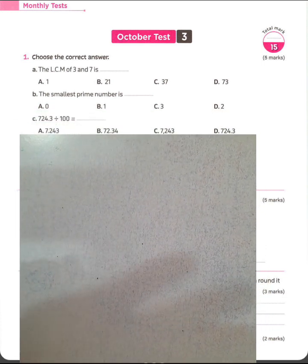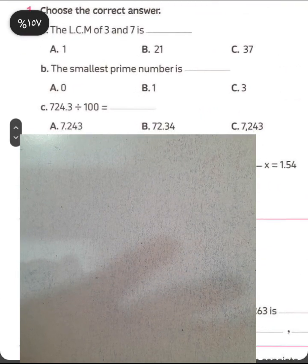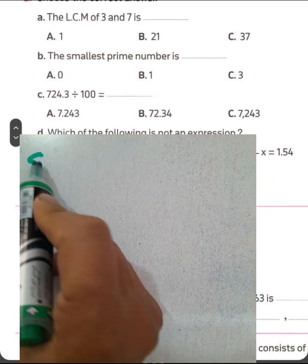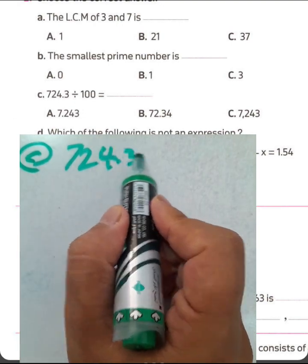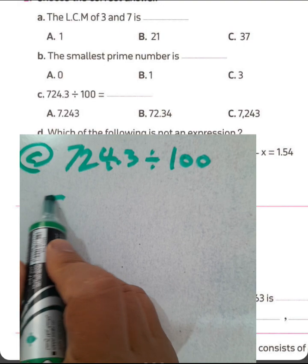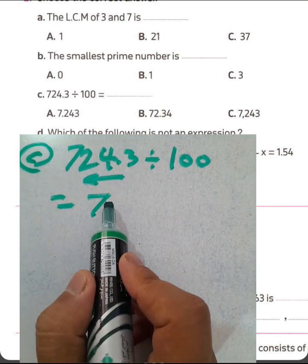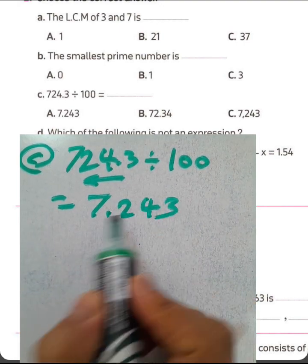Question letter C. 724.3 divided by 100. We can move the point to left hand side by two digits. 7.243.